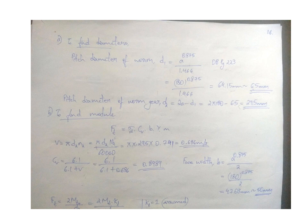Our next step was finding the diameters: the pitch diameter of worm and pitch diameter of worm gear. It can be defined from the K. Mahadevan Balaveera Reddy data handbook page 223. As d1 equals A times 0.875 divided by 1.466, we get the value of 64.15 millimeter.